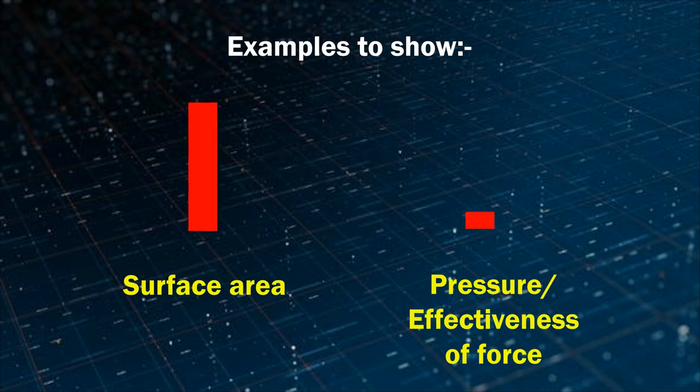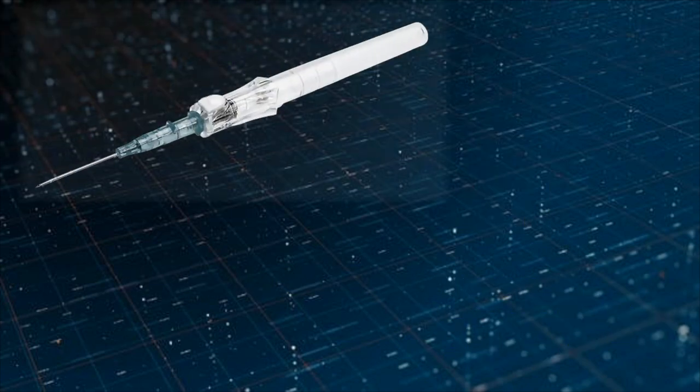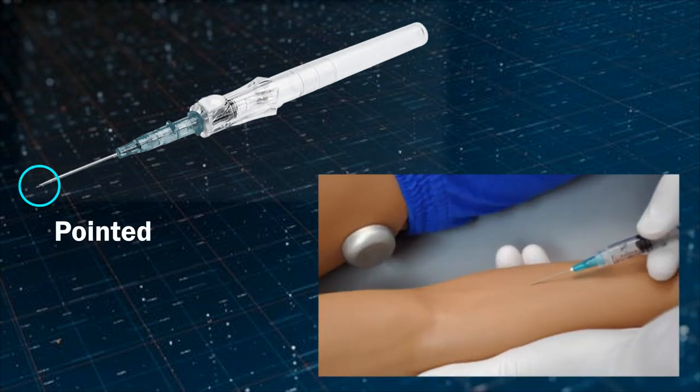Let's see few examples where surface area is reduced to increase the pressure or effectiveness of force. Needles that are used in injections are pointy so that they can penetrate easily in the muscles without applying much force.